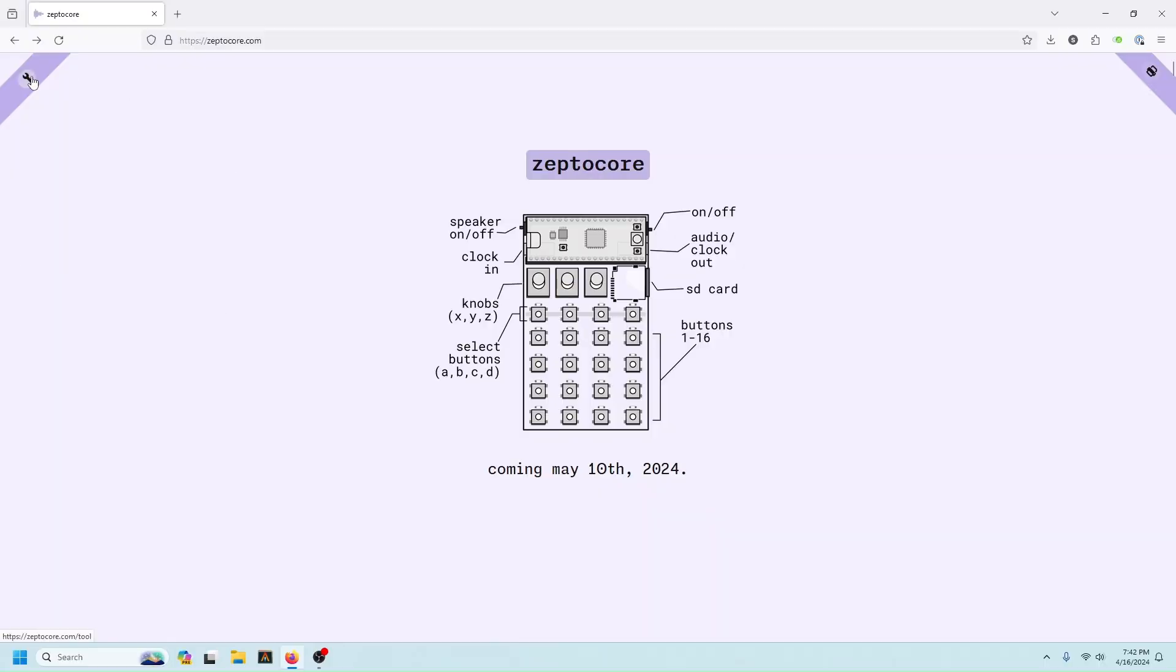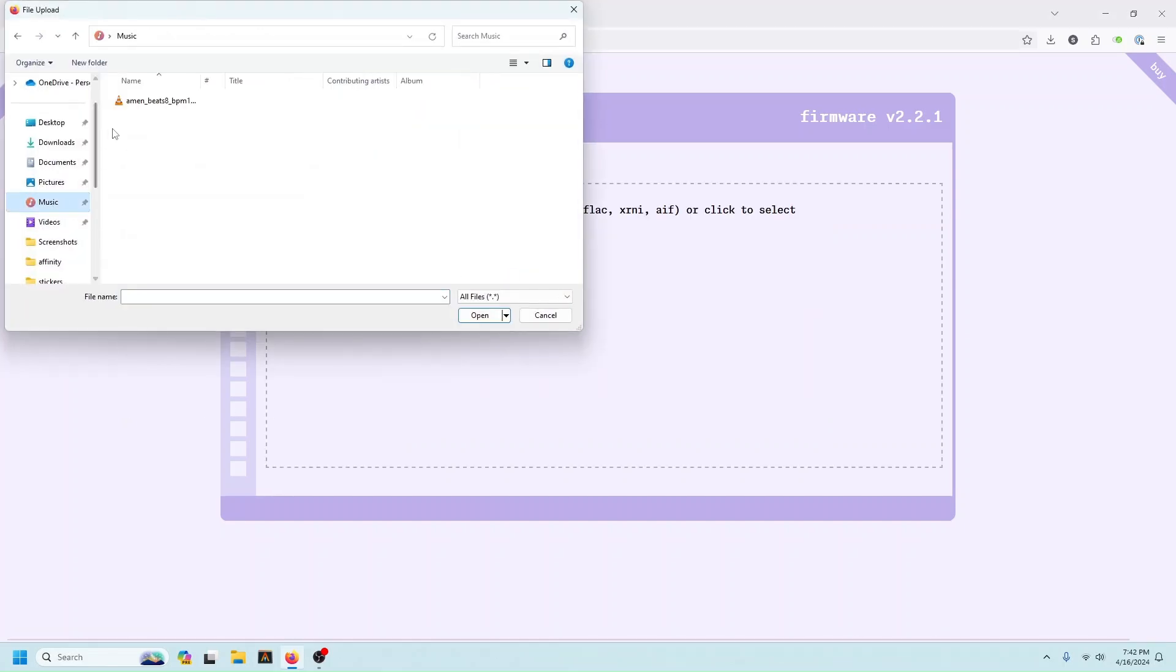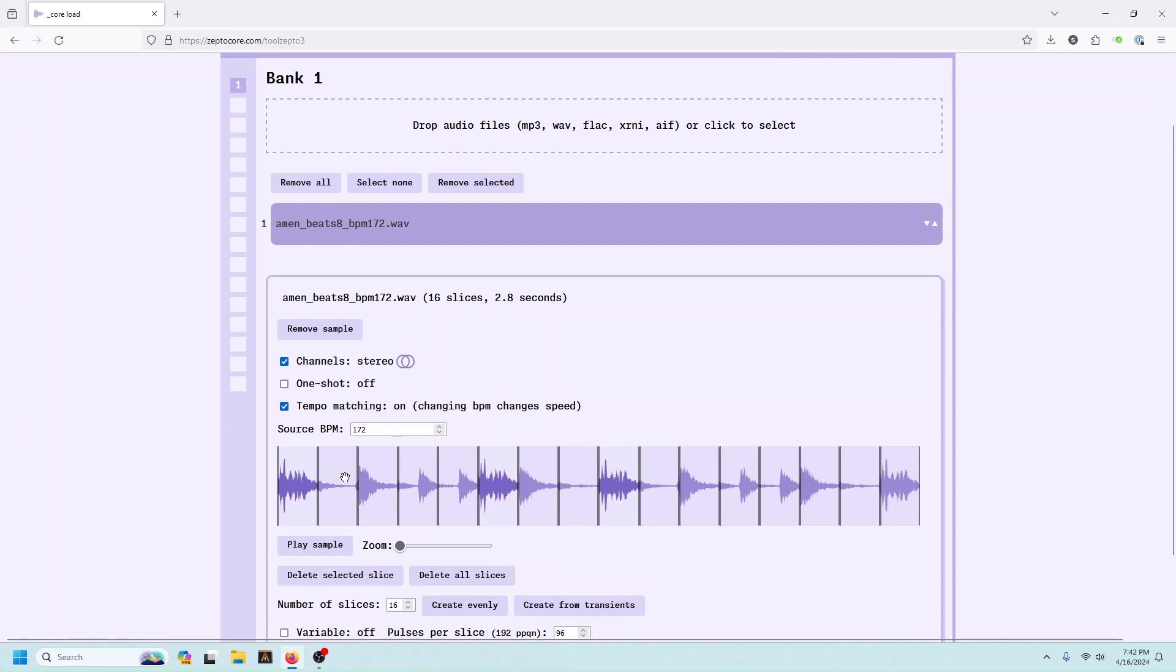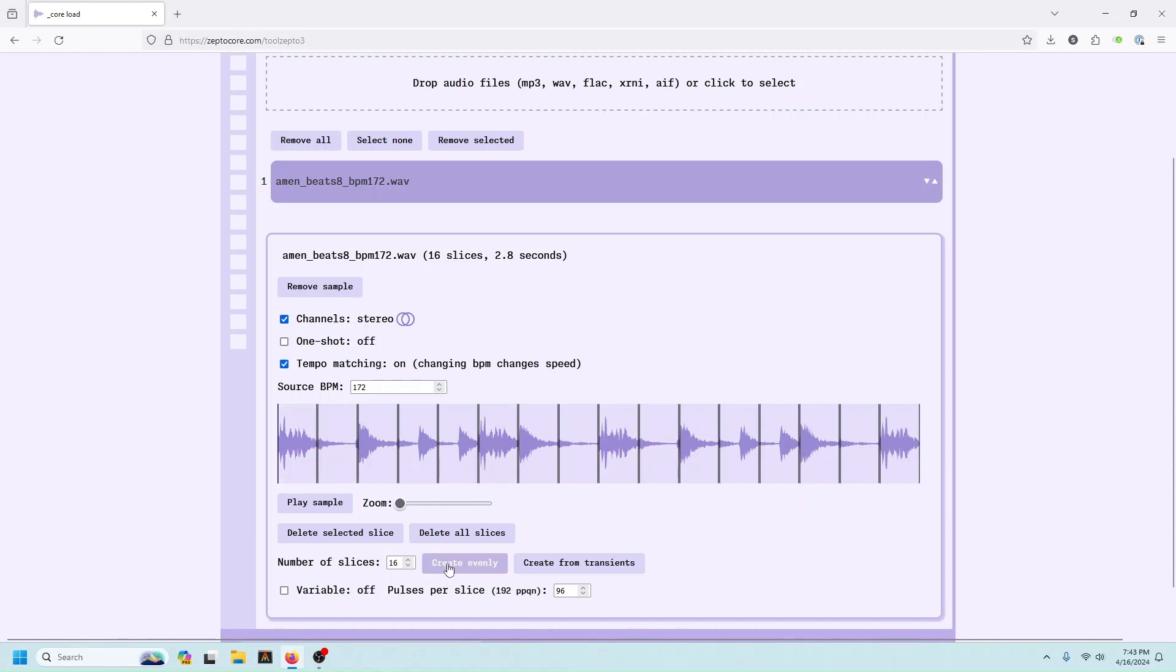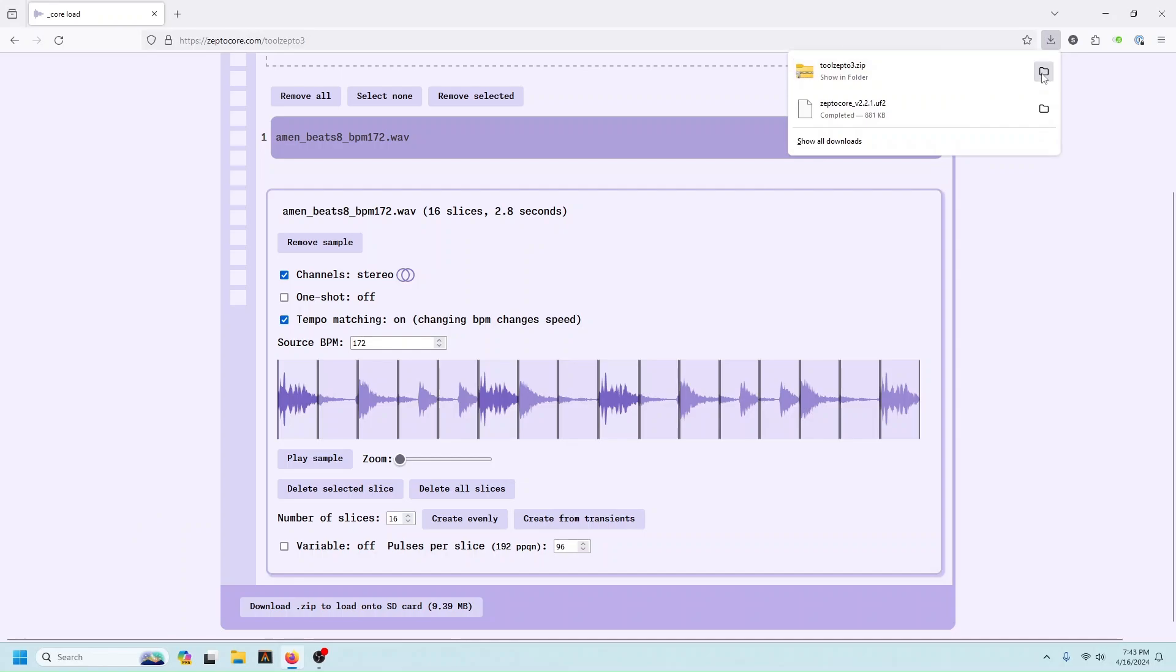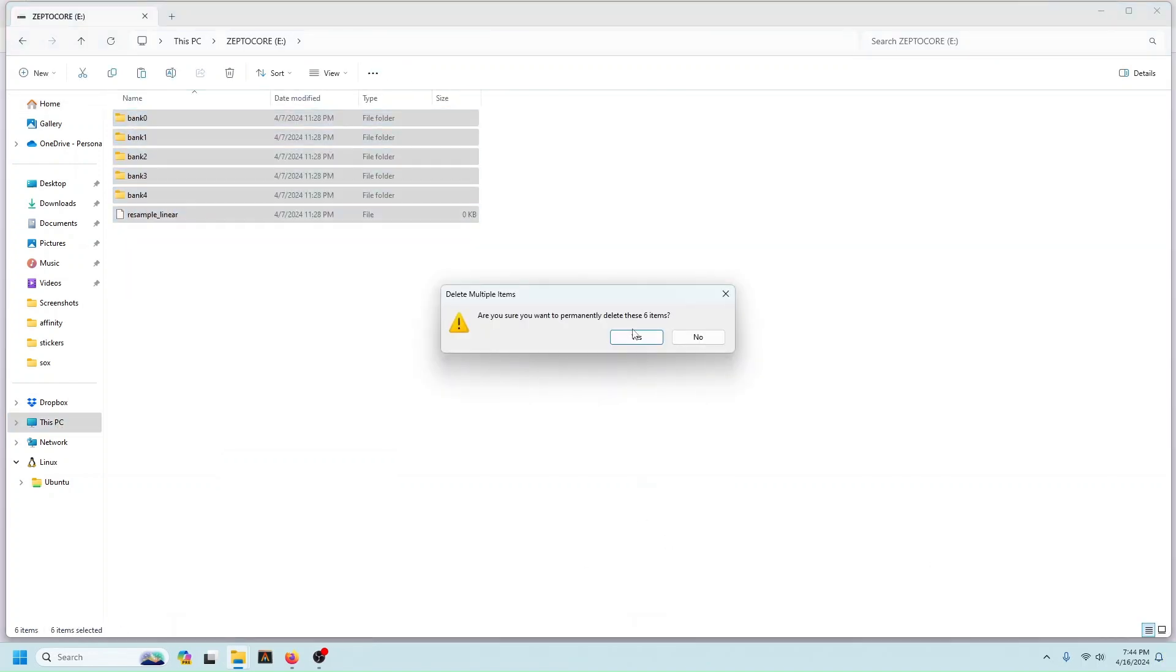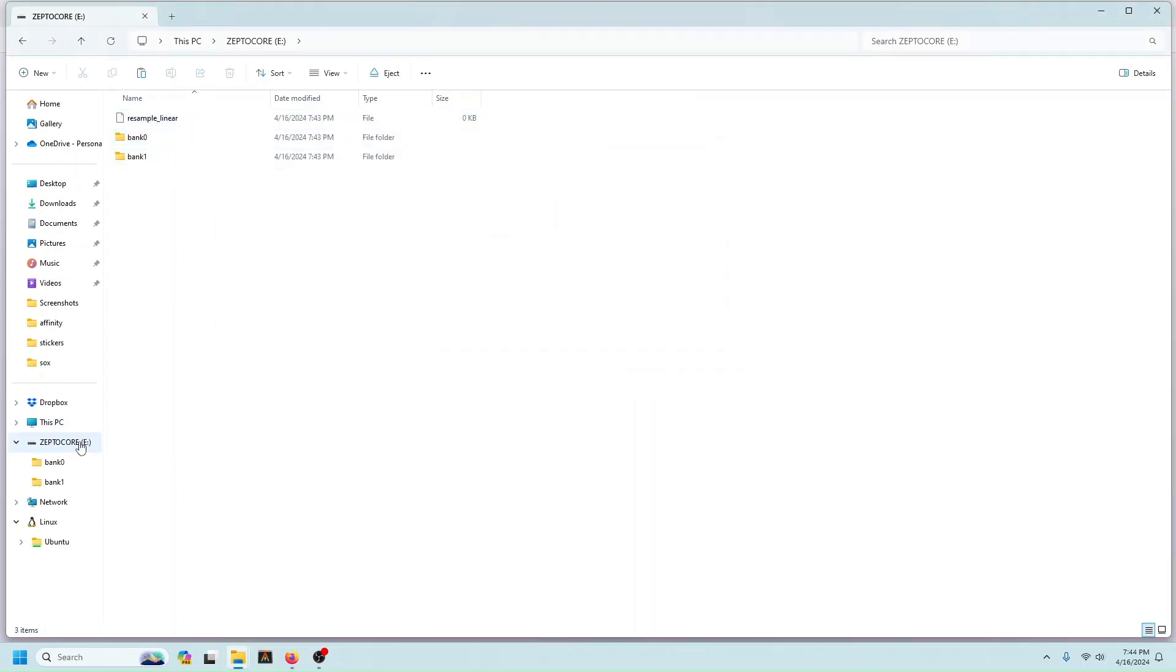I'll talk more about this later, but just to get you started, you can go to the tool, the sample tool, and you can drop in audio there to make your own samples. Here you can drag and drop any audio. You can make splice markers. You can say the number of splices, how evenly they are. You can create them from transients. You can add different samples to different banks. When you're already done, you just click download, and then the zip file will be downloaded. You extract it, and then the extracted folder will have several folders in it. Plug in your SD card, and when it pops up, you can copy those several folders into the SD card, deleting the old ones. And if you eject that and put that into the zeptacore, you'll be good to go.